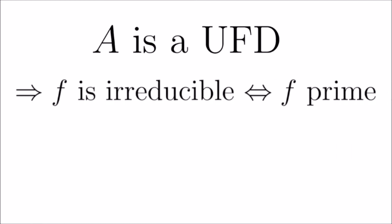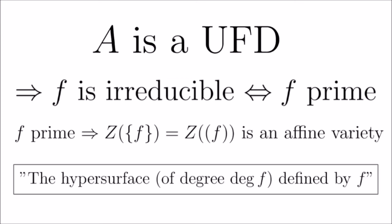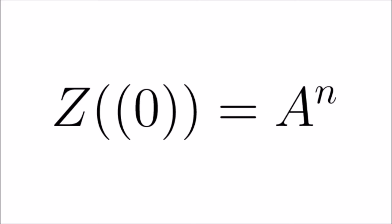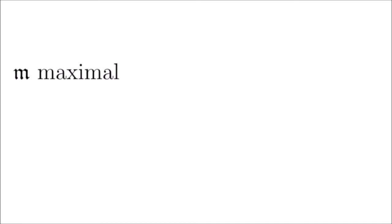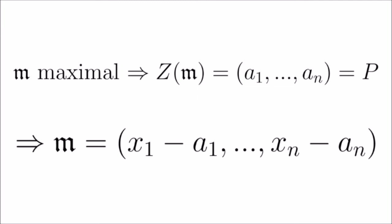Let's ground ourselves in examples of affine varieties. Our polynomial ring A is a UFD, which implies irreducible elements are prime. Thus for irreducible f, the zero set Z(f) is an affine variety, called the hypersurface defined by f. This means specifically that Z({0}) = A^n is an affine variety, justifying the name affine n-space. As well, a neat detail alluding to how topology gives information about algebra: let m be a maximal ideal. To say it's maximal is to say its zero set is a single point, meaning every maximal ideal is generated by elements of the form (x₁ − a₁, …, xn − an), letting us get general forms for all maximal ideals of our polynomial ring.